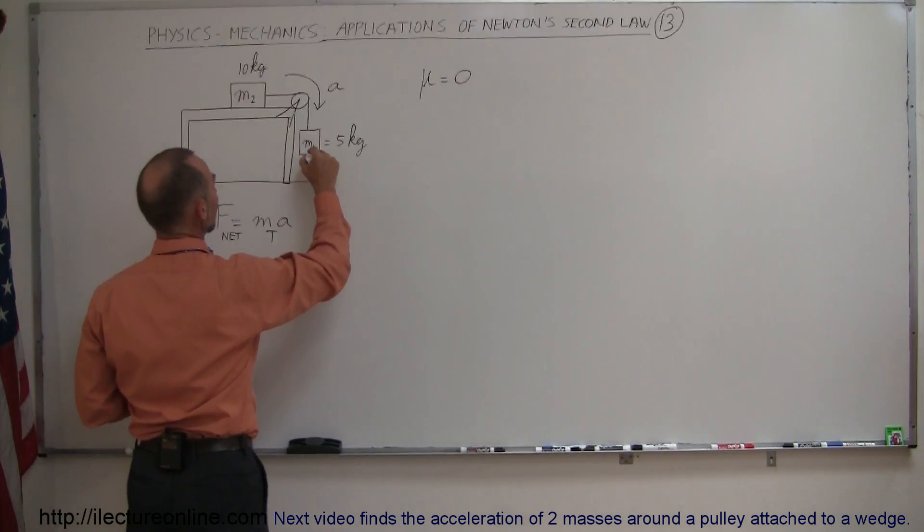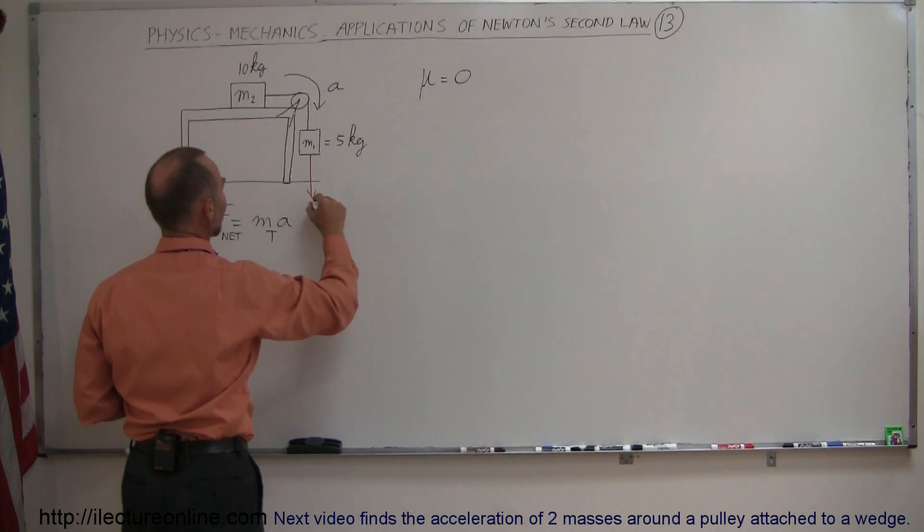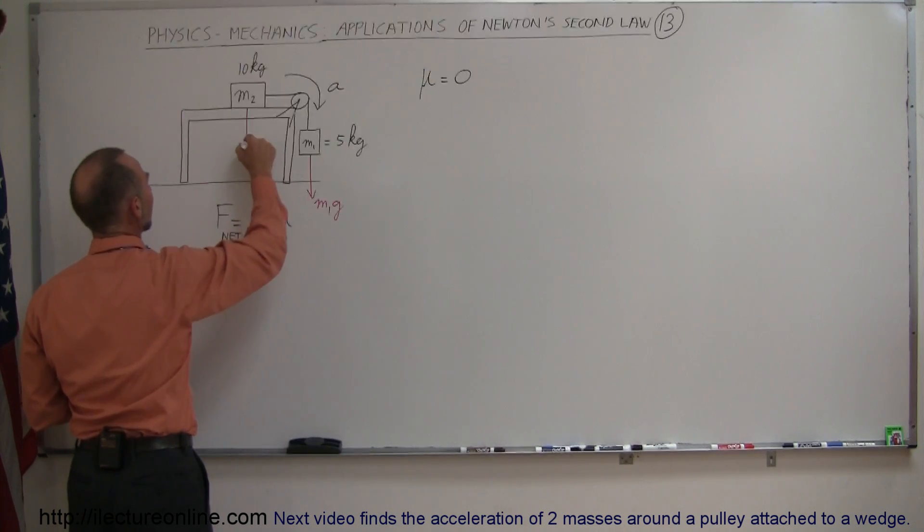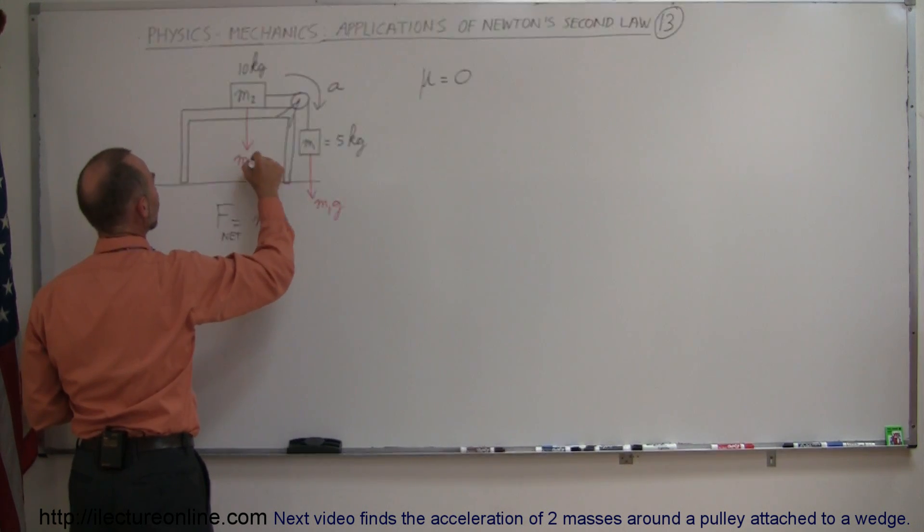For one thing we have M1 here, so we have the force of gravity pulling down on it, so that's M1G. Then we have the force of gravity pulling down on M2, so this is M2G.